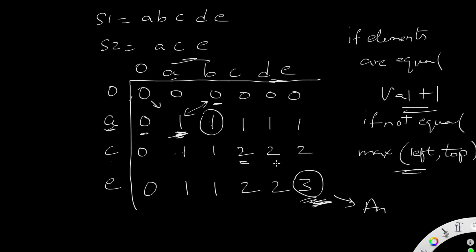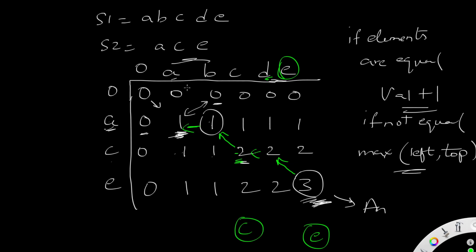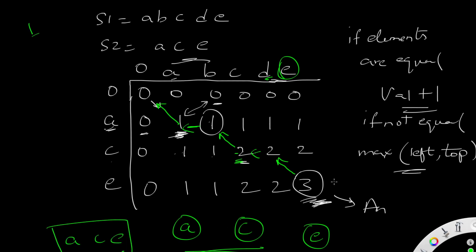The last element, 3, is our answer — the length of the longest common subsequence. To find the actual characters, we trace back diagonally: 3 was formed from diagonal increment at E=E, so we include E. The 2 came from C=C diagonally, so we include C. The 1 came from A=A diagonally, so we include A. Combining these, we get A,C,E — our longest common subsequence.